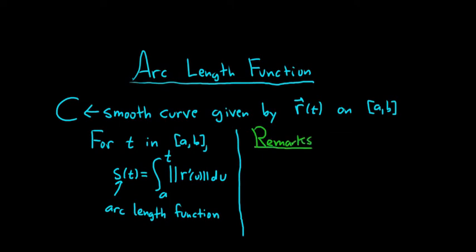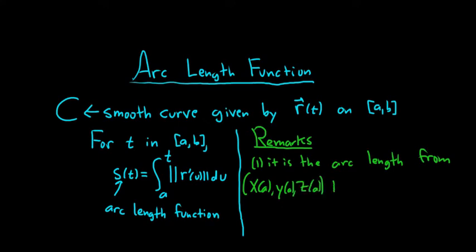The first remark is what it actually is. It is the arc length from a to t, so it's from the point (x(a), y(a), z(a)) to the other point (x(t), y(t), z(t)). So, it's the arc length from that point to that point.